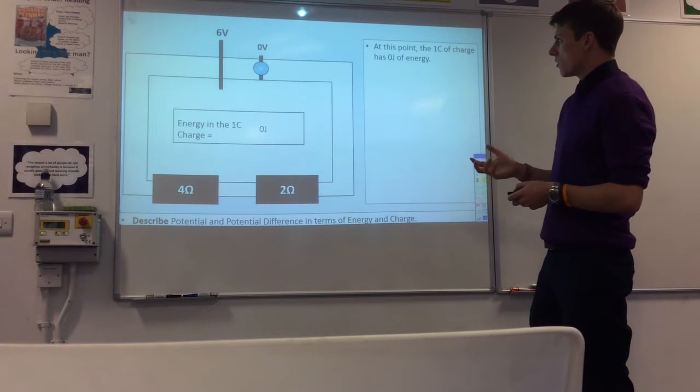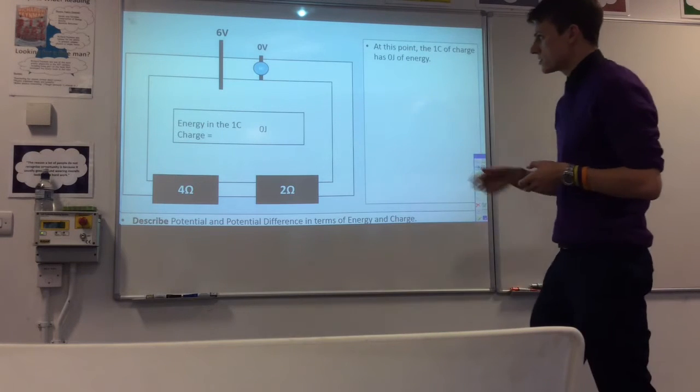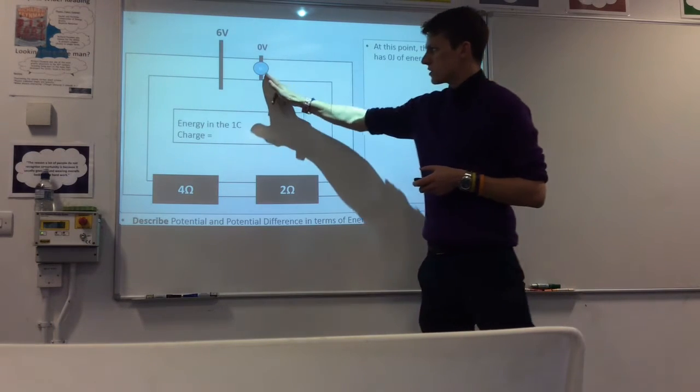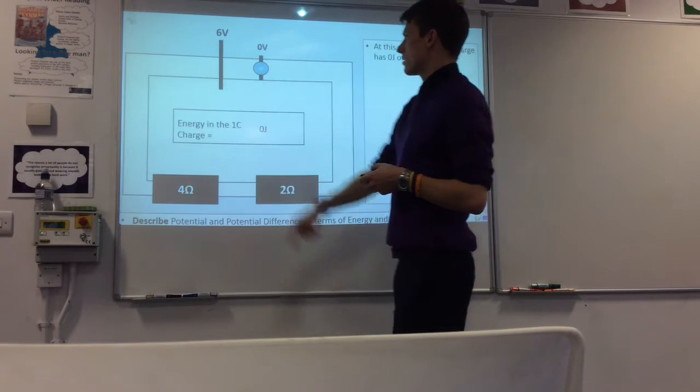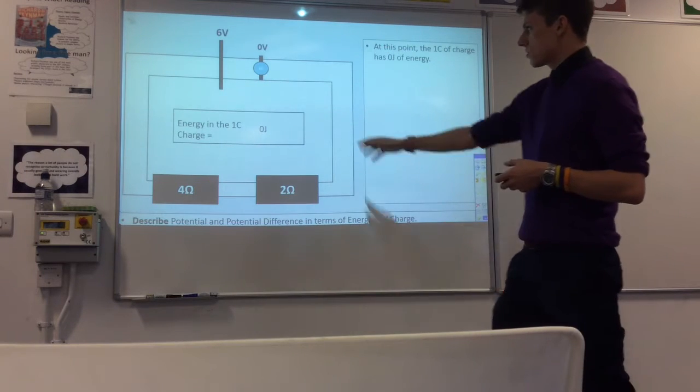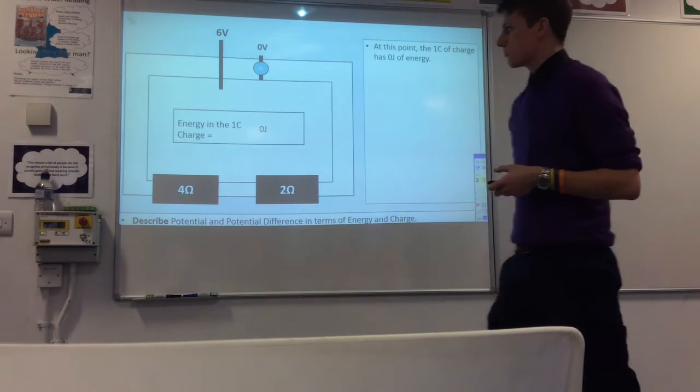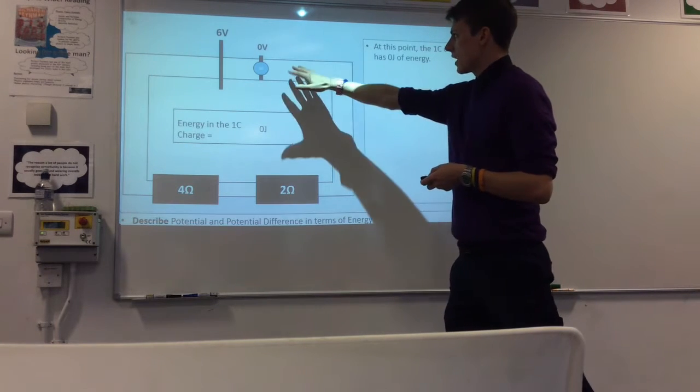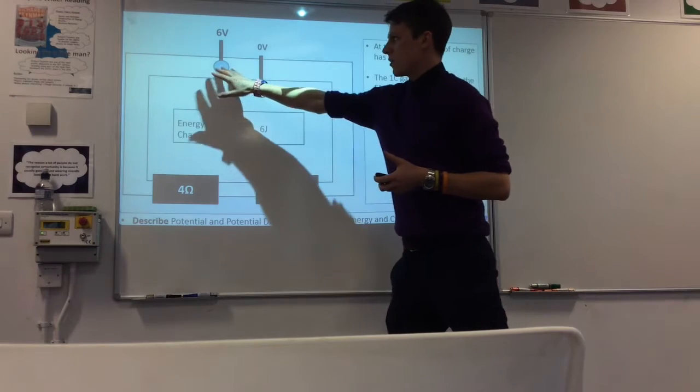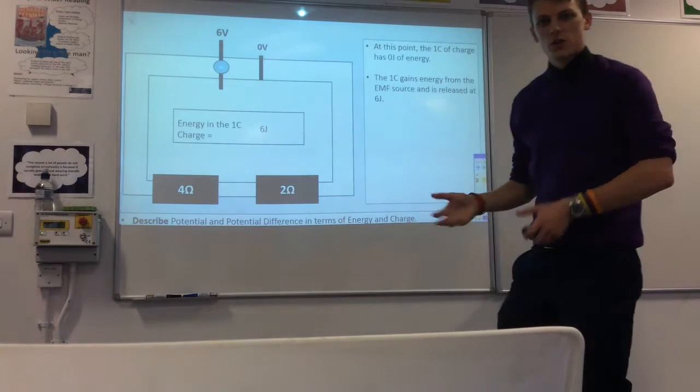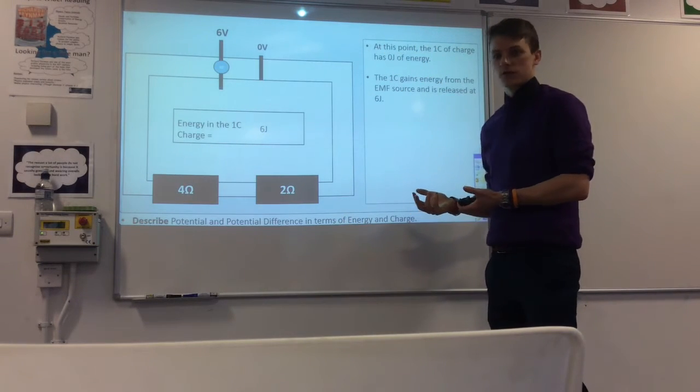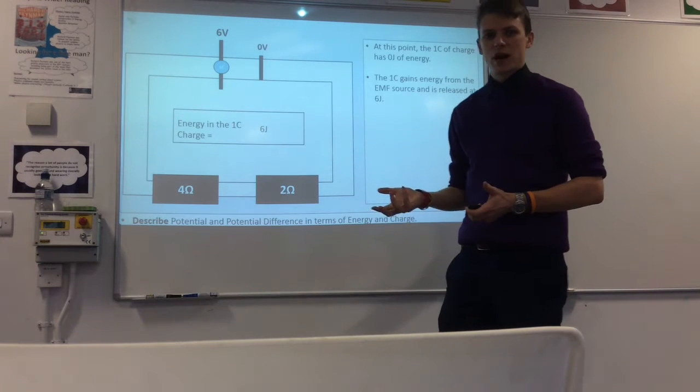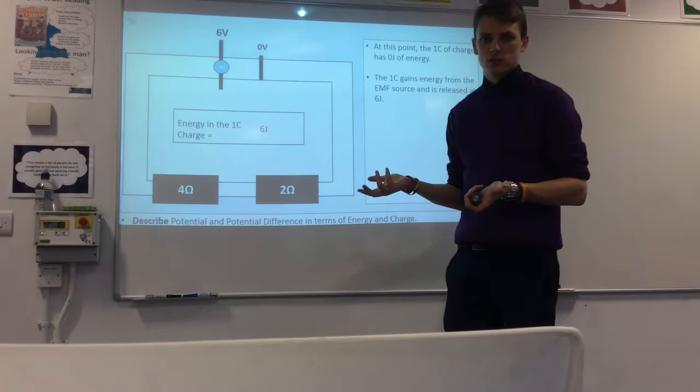In terms of what that actually looks like in a circuit. So if we start off, we've got our one Coulomb sitting over here. The first thing it's going to do is go through the battery. So it's starting off with no energy and it's going to go through our battery with EMF of six volts. And so it's gone through there and it now has six joules of energy or each electron has six electron volts of energy at this point. It's got the energy from the chemical energy in the battery or whatever you're using as your power source.